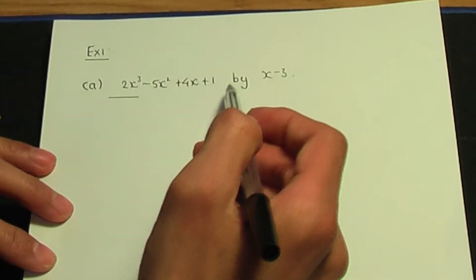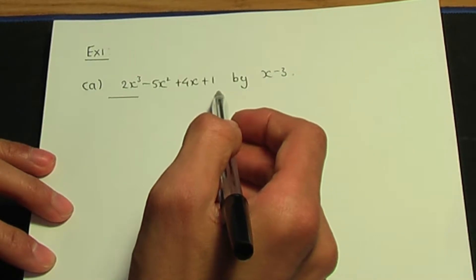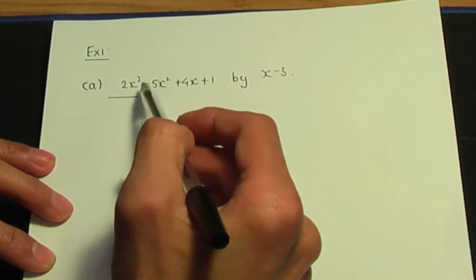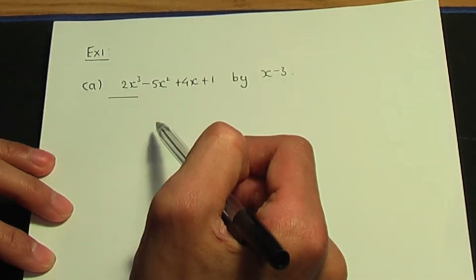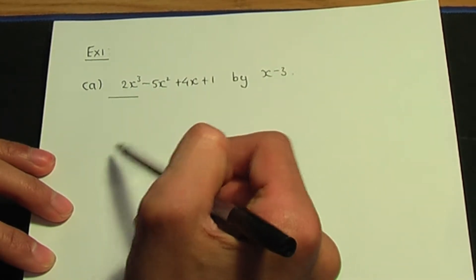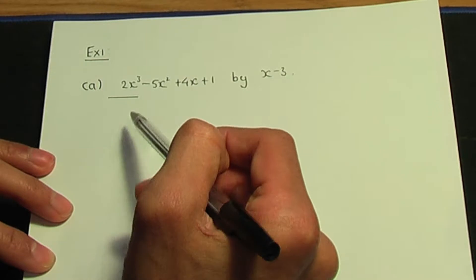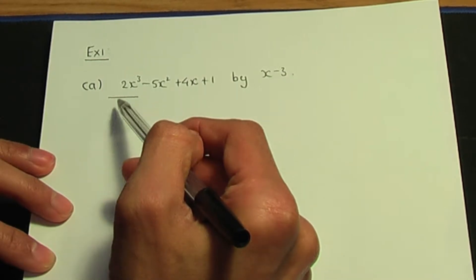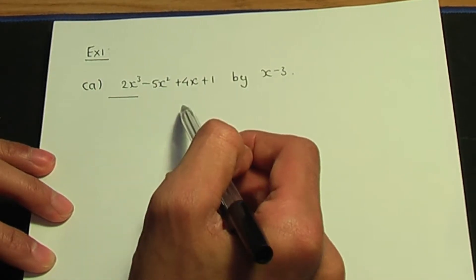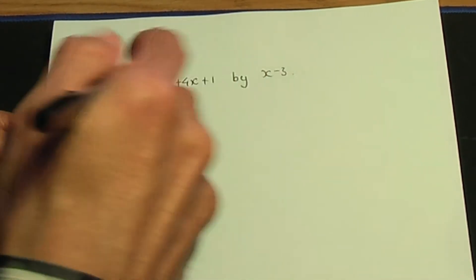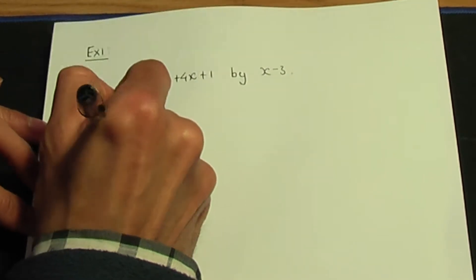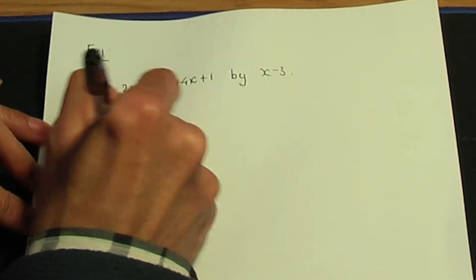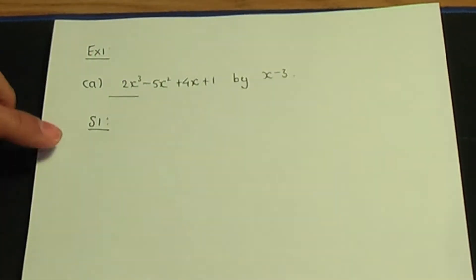Remember you can work out the remainder in two ways. One way is to use algebraic division, and you can use the remainder theorem — that is method number 2. So let me go through the steps behind the remainder theorem.